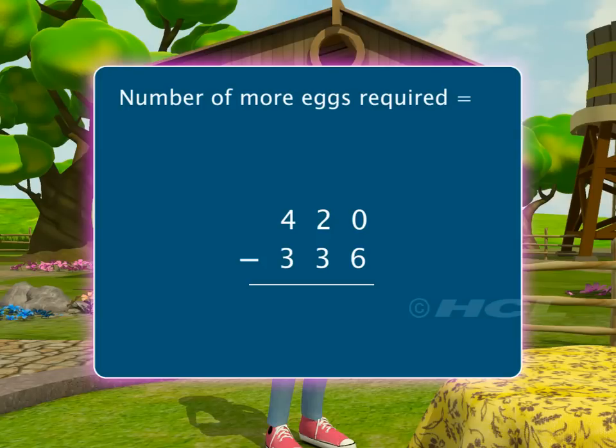We always start subtraction from the digit in the ones column. Since 0 is less than 6, we borrow 1 from the tens column. Subtracting 6 from 10 in the ones column, we get 4 as the answer.